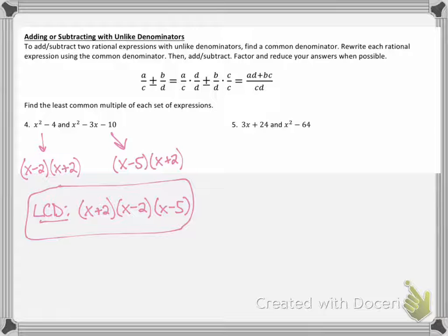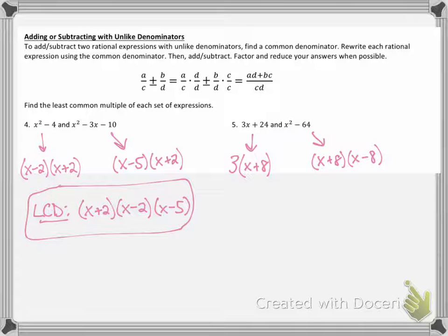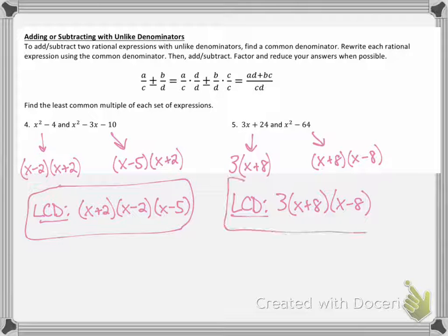The next example is the same idea — factor it apart, see what factors are there, and see what we'd have to apply to the opposing expression to make them common. Starting with 3x plus 24: we've got a GCF of 3 with a factor of x plus 8 left over. Here's another difference of squares in x squared minus 64 — it's x plus 8 times x minus 8. So my common denominator has x plus 8 in both, plus a factor of 3 from the first and x minus 8 from the second, giving a least common multiple of 3 times x plus 8 times x minus 8. I'm going to leave these factored apart because it's more beneficial when adding and subtracting these fractions.